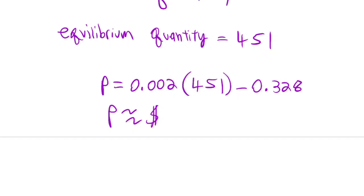And that's how we do it. The equilibrium price is approximately 57 to 58 cents per bushel. Thank you.